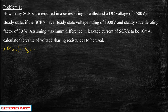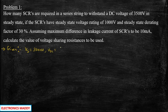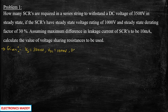So they've given Vs equal to 3500 volt. They've given the value of Vd1 as 1000 volt. Apart from that, they've given the derating factor in percentage as 30%, so d in terms of percentage is given as 30%. And then they have given us delta Id, which is basically the leakage current of SCRs, to be equal to 10 milliamperes.